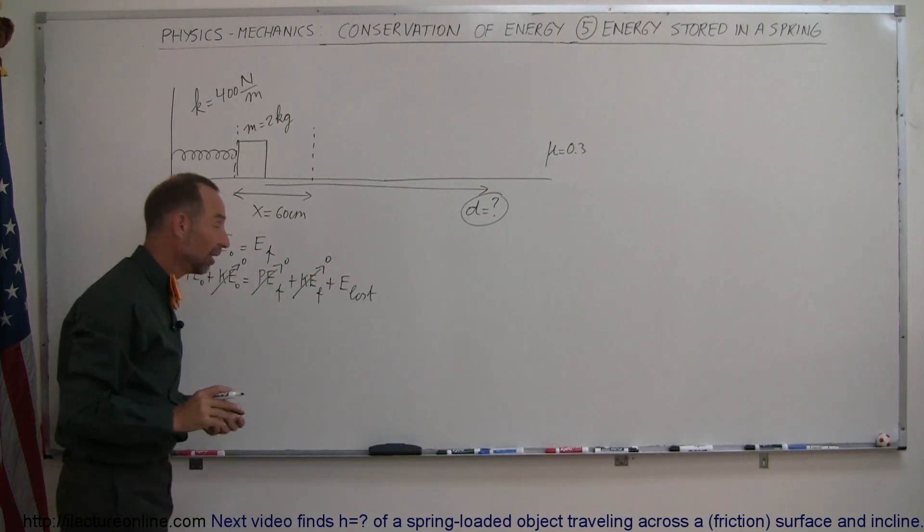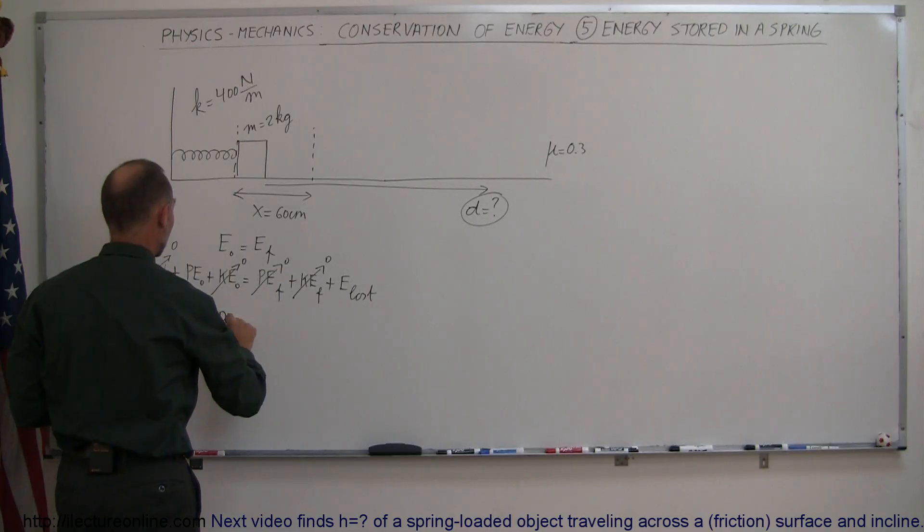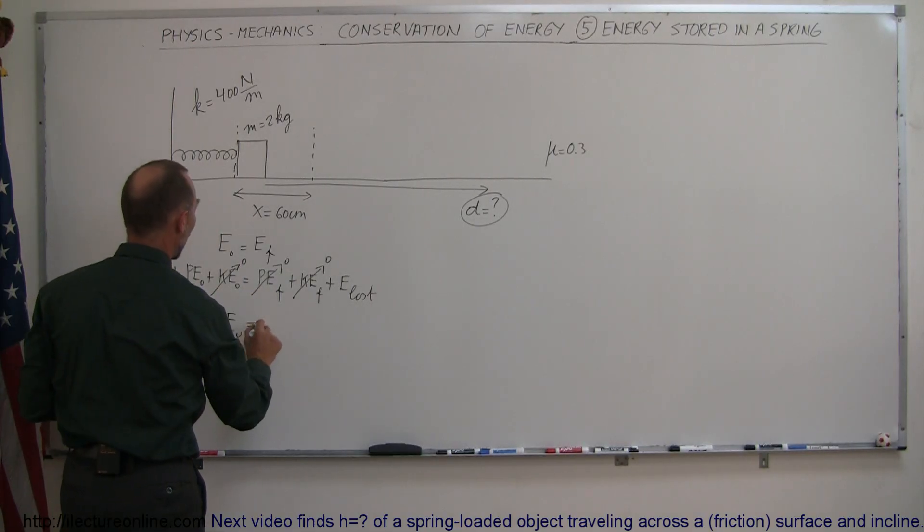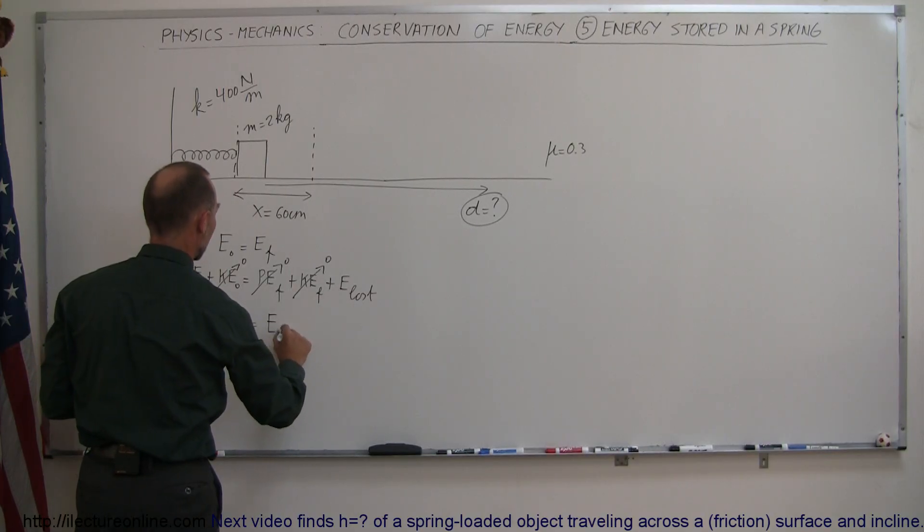So really what happens now is it's a simple equation where the initial potential energy stored in a compressed spring—all of it—will be used to overcome the energy lost, E_lost.